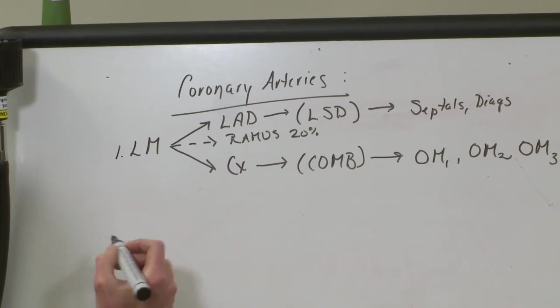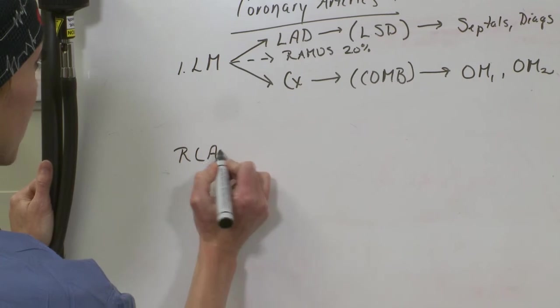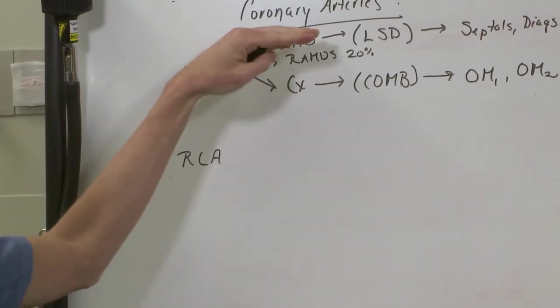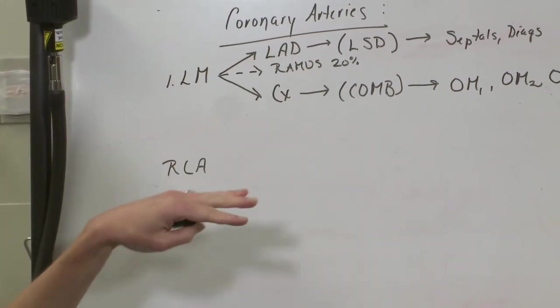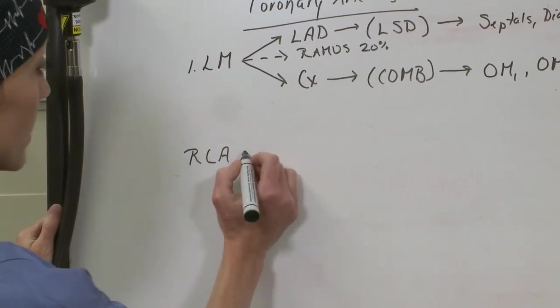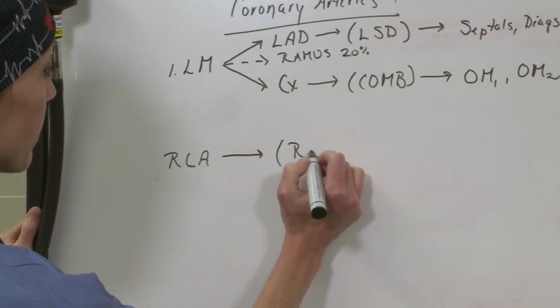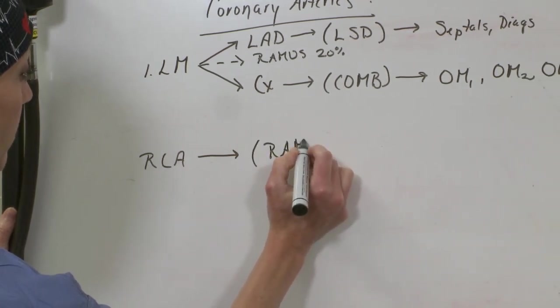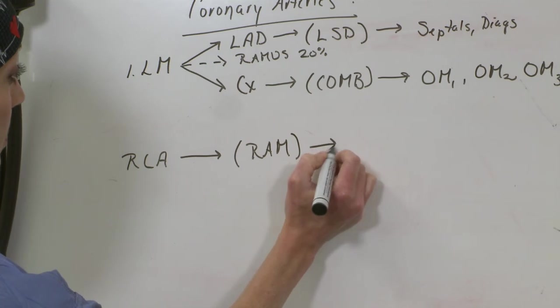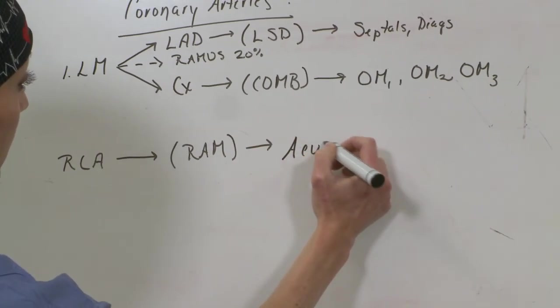Next we're going to go over the RCA. So we've hit the anterior surface of the heart, the lateral surface, and now we're going to go over the right side and the inferior side. Off of the RCA, I want you to remember RAM. And that's going to be your acute marginal branch, and you can get several of those.